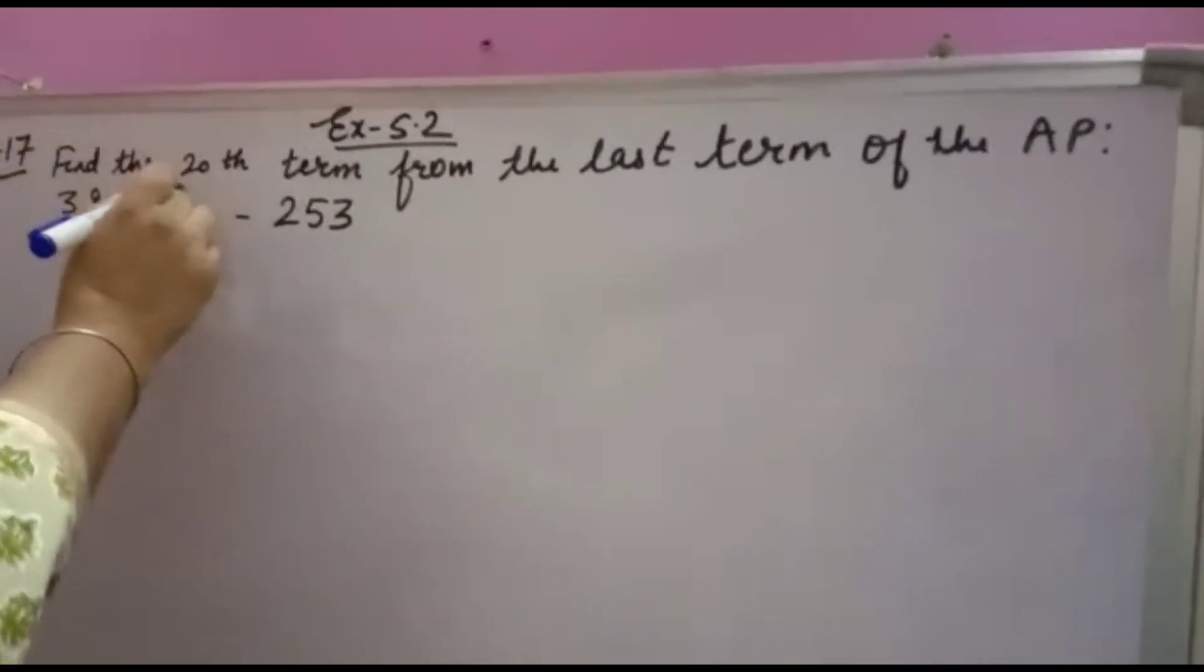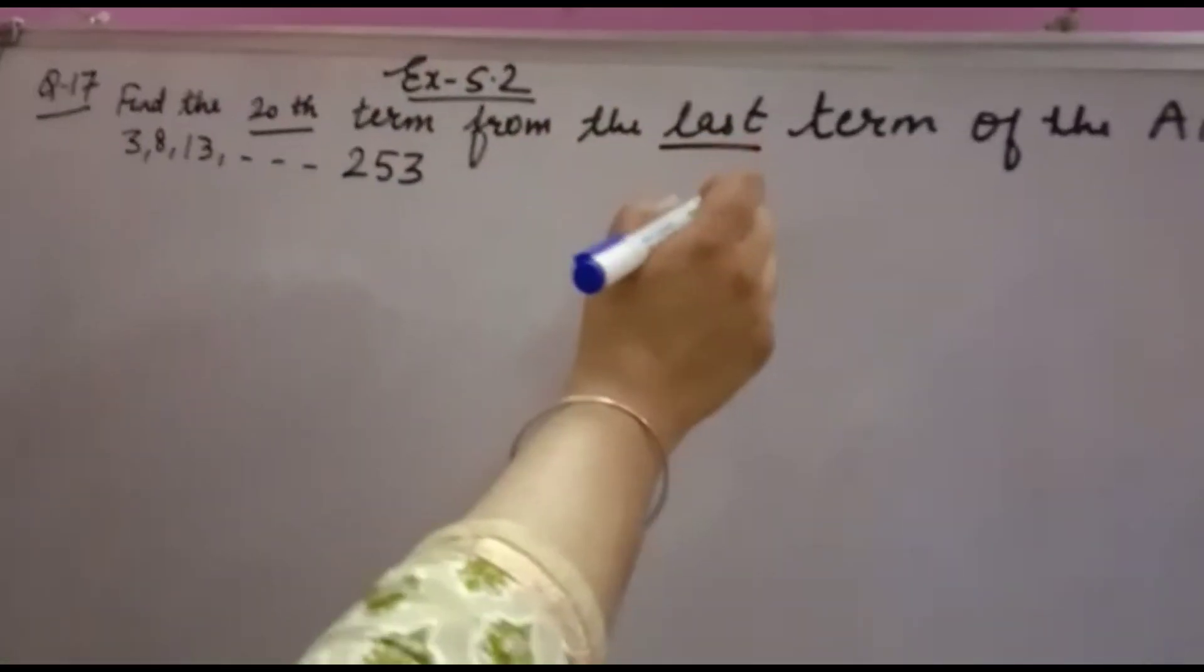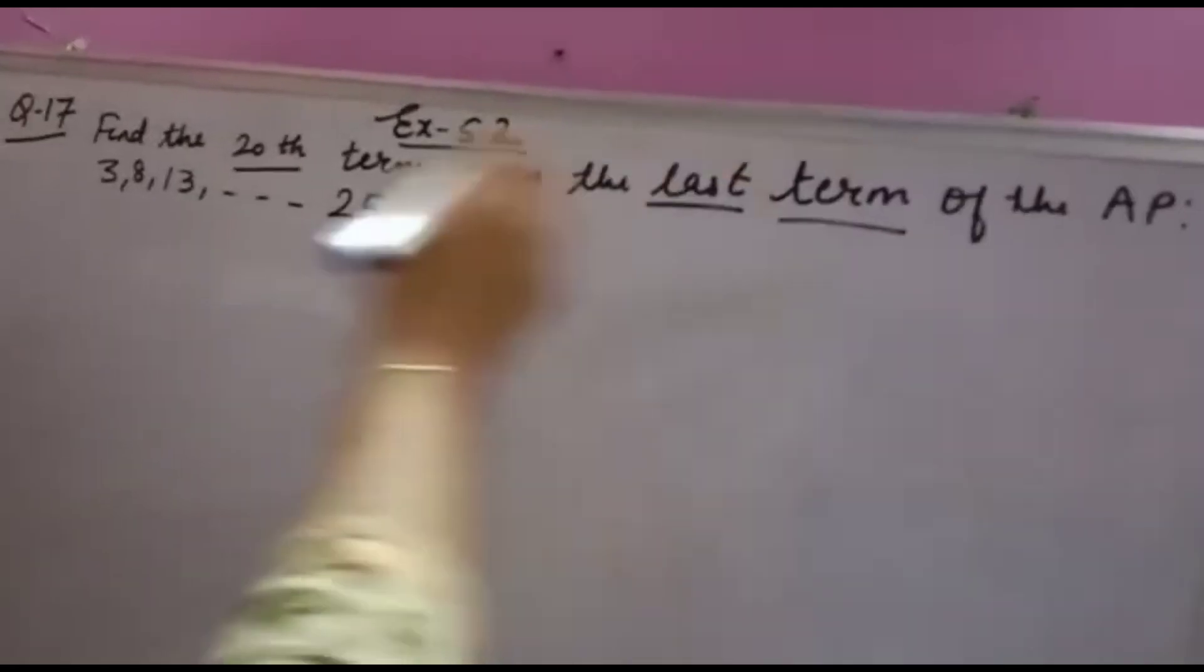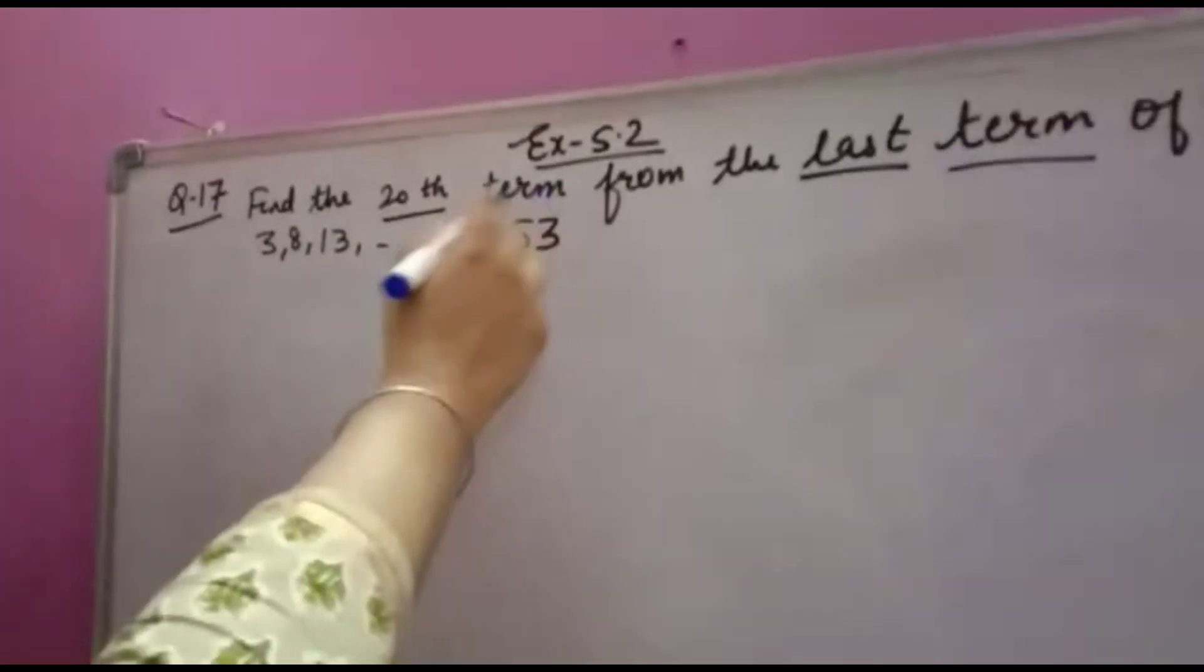This is equation number 17. Find the 20th term from the last. You have to find the 20th term from the last term of the AP: 3, 8, 13, and so on, up to 253. Last term is 253.